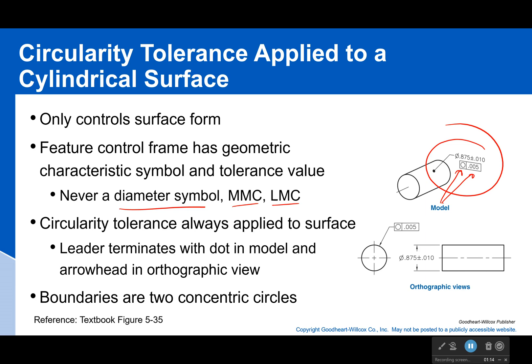Circularity tolerance is always applied to a surface, and the leader will terminate on the surface — you'll see it like this. You will never see it attached to a size dimension. It will always be attached with a leader line. Or if you're in a model, it can be attached to the diameter dimension right there — never in an orthographic view.